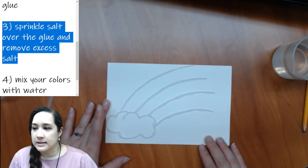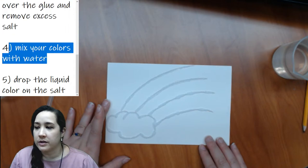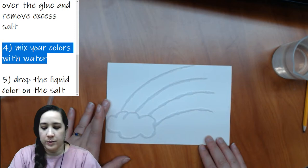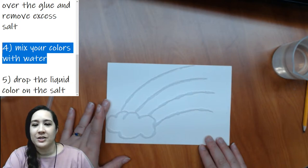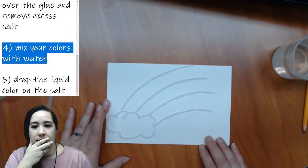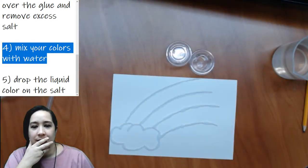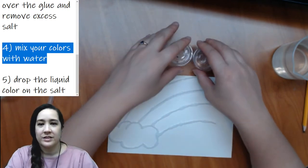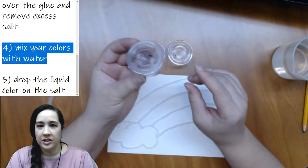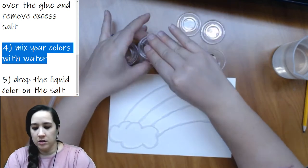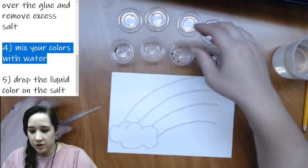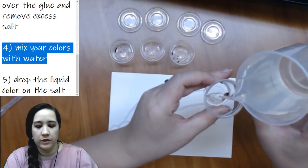Okay, so the next step, once our canvas is covered with the salt and we shake off the excess, we're going to mix the colors. So I put a little bit of food coloring, oh, sorry, I think my camera, what's going on? Let me just reboot the camera real quick. Okay, there we go. I think it froze a little bit. Sorry about that.